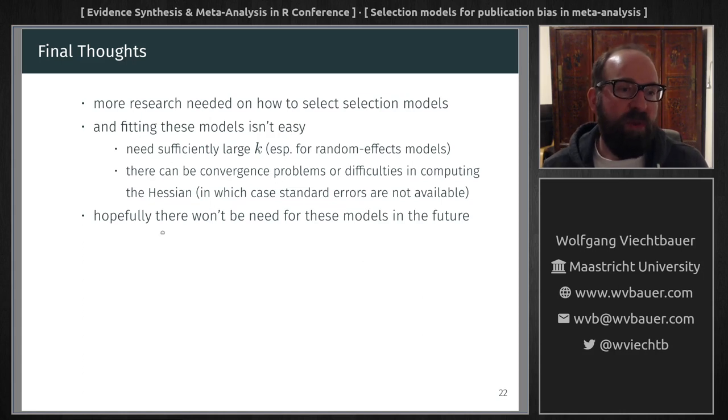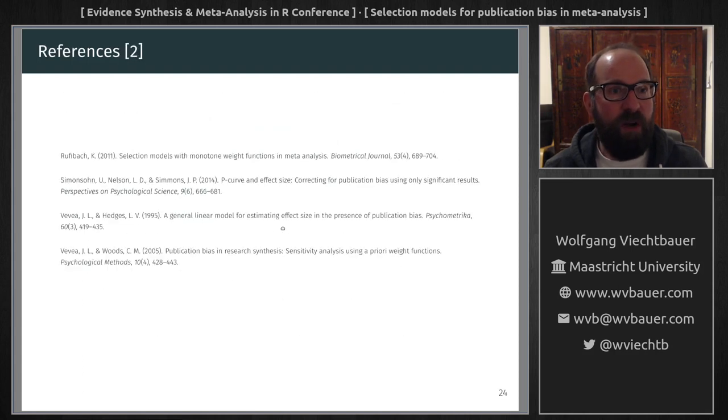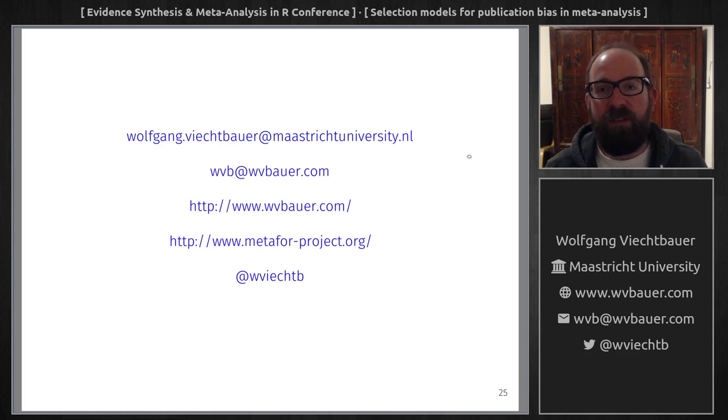Now, I want to finish this talk with one last point here, namely that hopefully we will get to a point where we won't need these models in the first place. So if our meta-analysis is based on pre-registered studies, then essentially we are minimizing or eliminating publication bias. But while we are not quite there yet, so in the meantime, we can maybe try to address publication bias through some of these selection models. So here are the references and my contact information. So thank you for your attention.